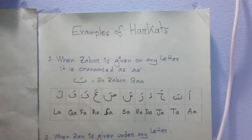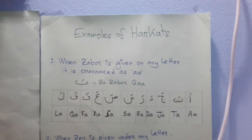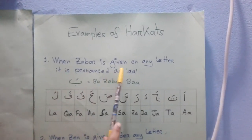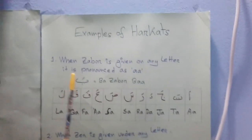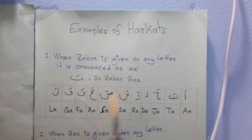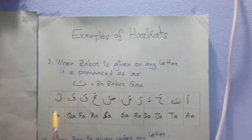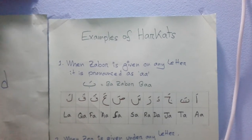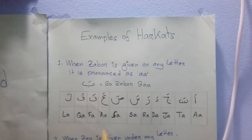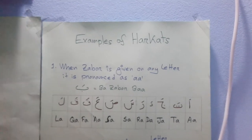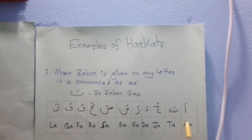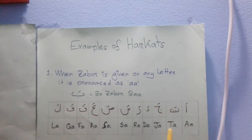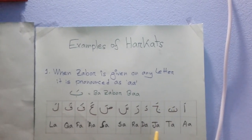Now we see the example of Harkat. Number 1: when Zawur is given on any letter, it is pronounced as A. We can see Zawur in other Arabic letters. Like: Alif — Zawur — A; Ta — Zawur — Ta; Zim — Zawur — Za.